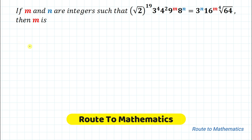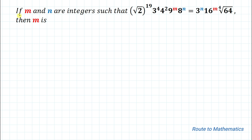Hello everyone, welcome to Root 2 Mathematics. In this video we're going to solve this interesting question. If m and n are integers such that √2 to the power 19, multiplied with 3 to the power 4, multiplied with 4 to the power 2, multiplied with 9 to the power m, multiplied with 8 to the power n equals 3 to the power n, multiplied with 6 to the power m, times the 4th root of 64 — find the value of m.